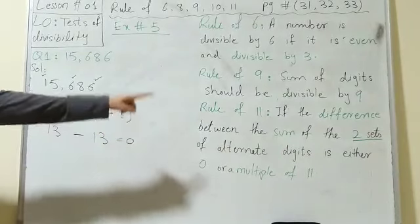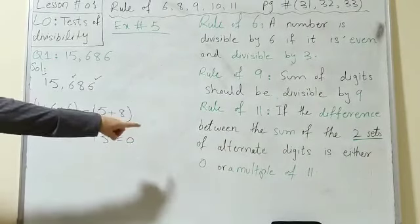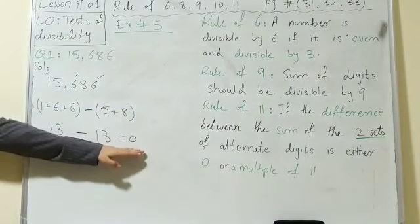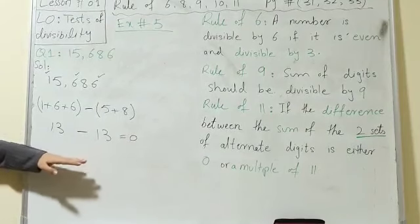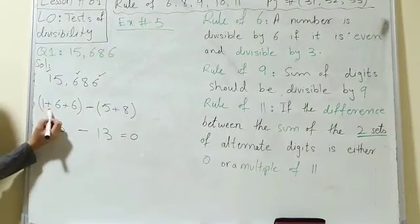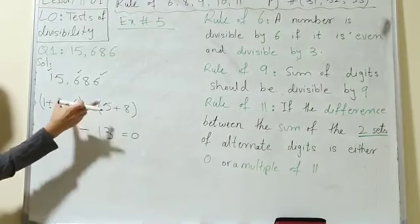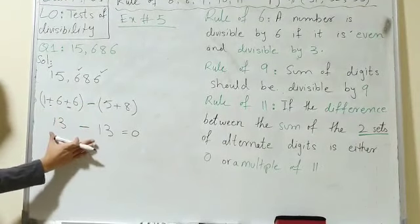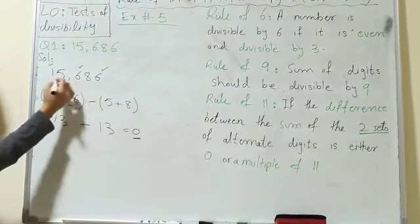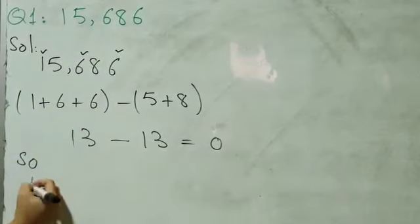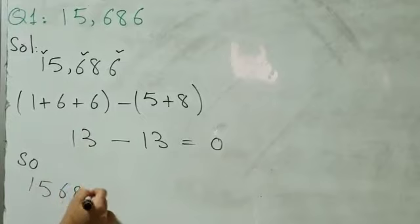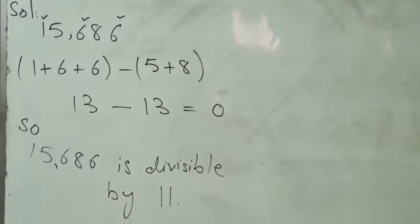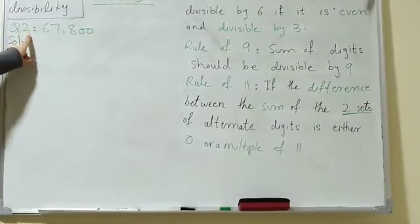The difference between the two sets is 0. According to the rule, the difference should be 0 or a multiple of 11 — that is, 11, 22, 33, 44, and so on. Since the difference is 0, the condition is satisfied, which means 15,686 is divisible by 11.